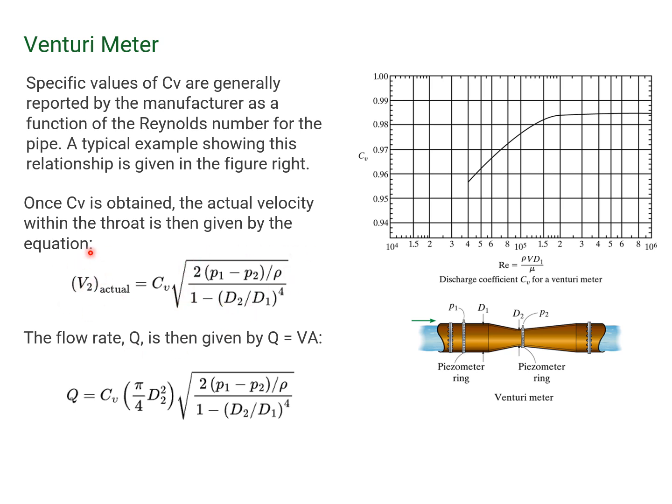Here is the actual velocity. Therefore, the flow rate, which is V times A, is given by the following equation, where this is the area where D is the diameter of the pipe at the throat.